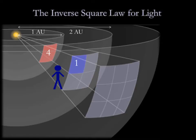Because of the inverse square law, the light spreads out. Each square on the sphere twice as far away receives only a quarter of the light as the square on the first sphere.